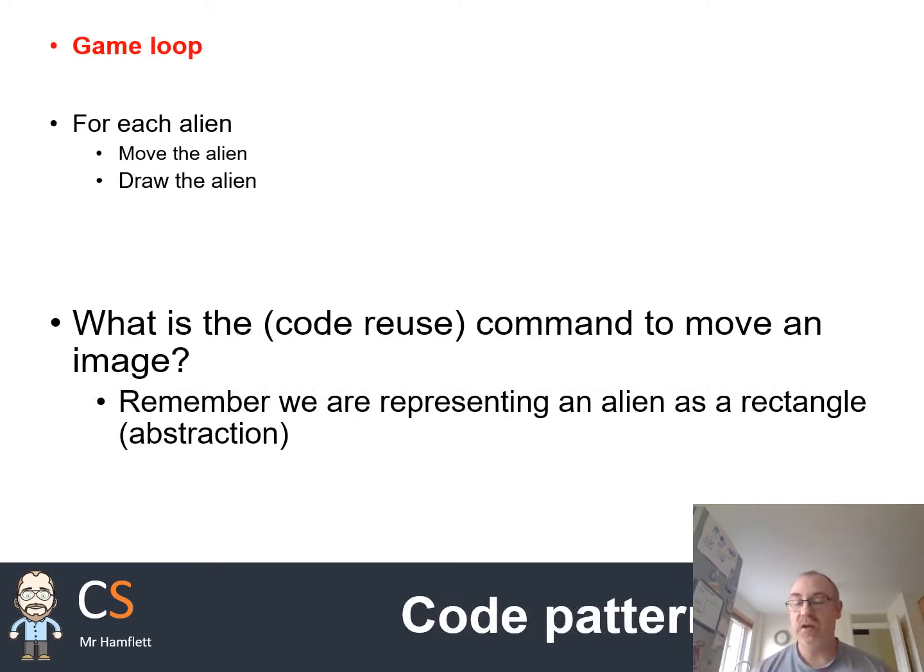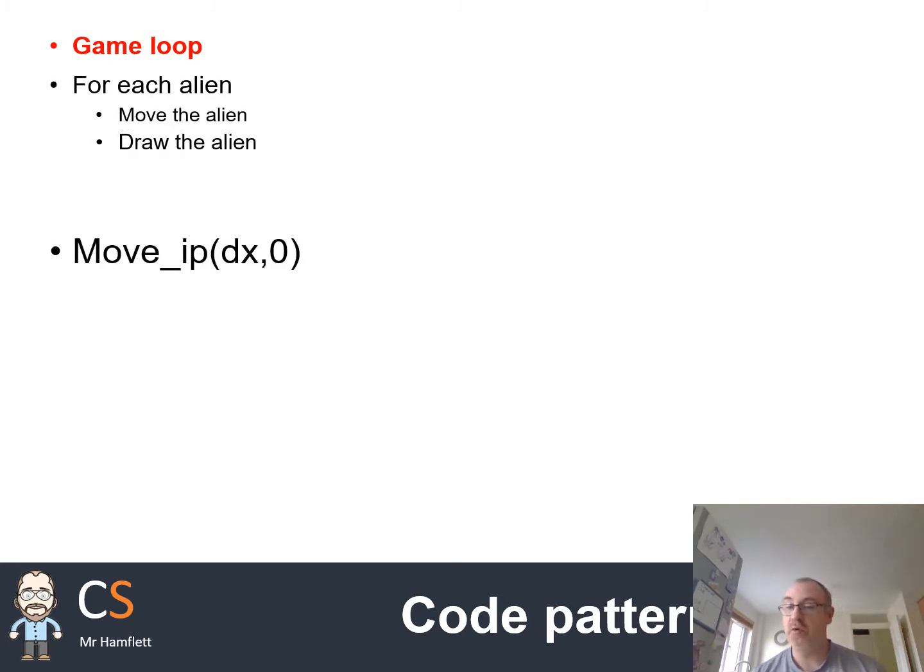Inside our game loop, we're going to move the aliens and then draw the aliens as well. In order to move an alien, remember that we are using a rectangle to represent our alien. We can use move_ip or move in place.